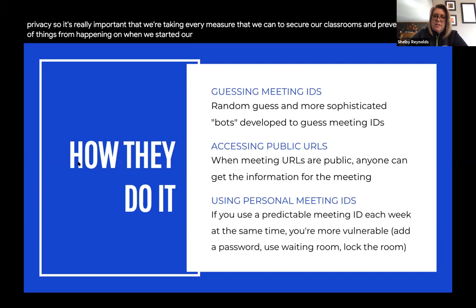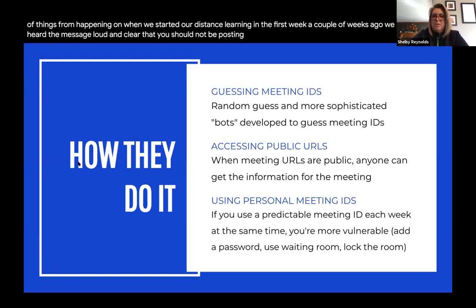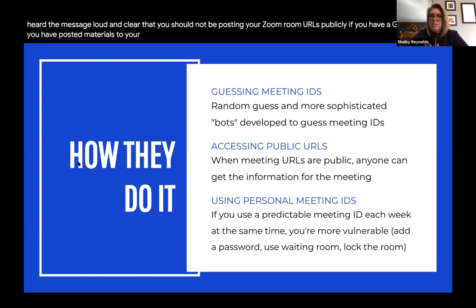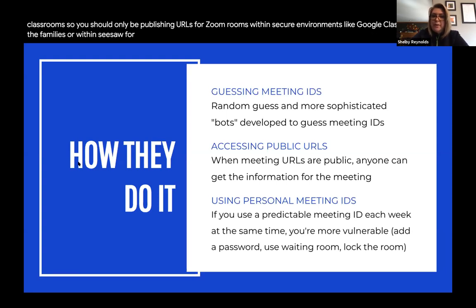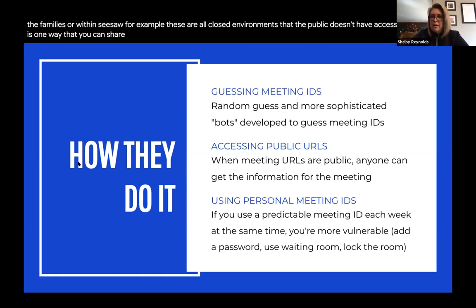Early on in our distance learning, we hoped you heard the message clearly: do not post your Zoom room URLs publicly. If you have a Google site or materials posted to your school's website, those are potentially public ways for people to get your classroom URLs. You should only publish URLs within secure environments like Google Classroom, through emails, Synergy, direct emails to families, or within Seesaw — all closed environments the public doesn't have access to.